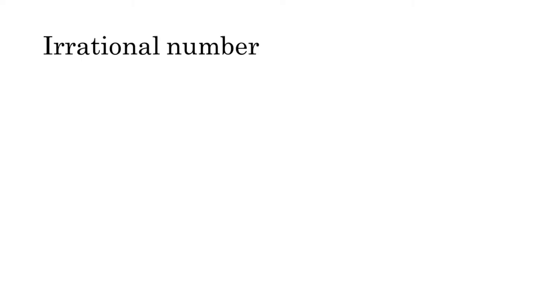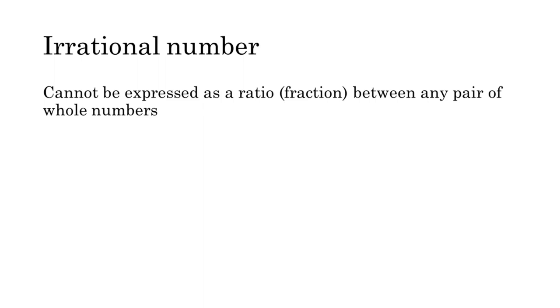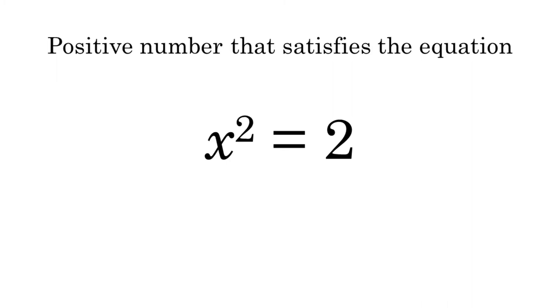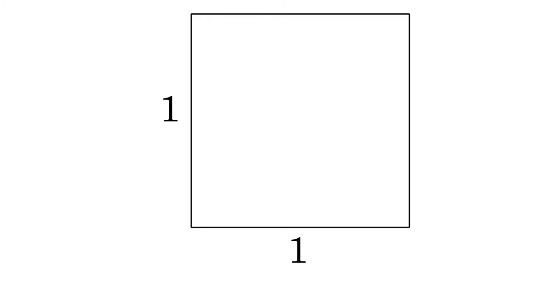This is because the twelfth root of 2 is an irrational number — one that cannot be expressed as a ratio between any pair of whole numbers. The most common example is the square root of 2, the positive number that satisfies the equation x² = 2. It will be impossible to divide any whole number by any other whole number to get a quantity satisfying this equation. But it's trivially easy to construct this quantity using geometry. Consider a square where each side is one unit long. The length of the diagonal from corner to corner will be the square root of 2, by the Pythagorean theorem about right triangles.